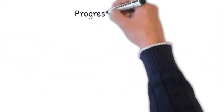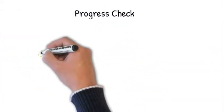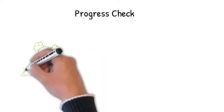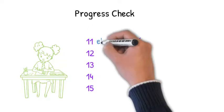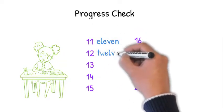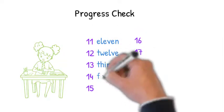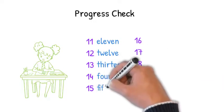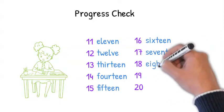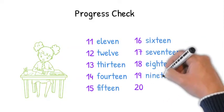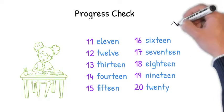So we just looked at some two-digit numbers written in numerals and your task was to write them in words. Let's see how you did. 11, 12, 13, 14, 15, 16, 17, 18, 19, and 20. Fantastic work.